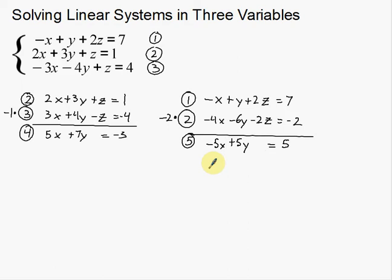Essentially what I've done is turned this from a system of three variables into a system of two variables. Notice equations four and five only have x and y. Now I'm going to take these two equations and eliminate one more variable. Once I eliminate that one variable, I'll have only one left and I'll be able to solve for it.